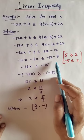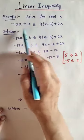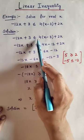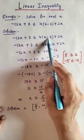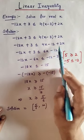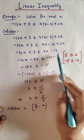How to solve linear inequality for one variable x. The inequality is -12x + 3 less than or equal to 4 into (x - 3) plus 2x. Expanding the right side, this becomes 4x - 12 + 2x, which simplifies to 6x - 12.